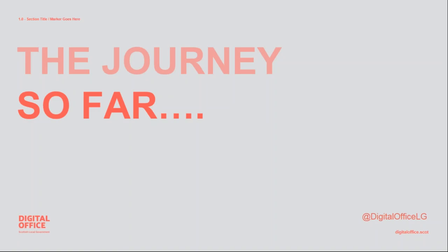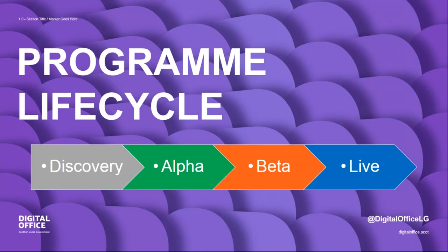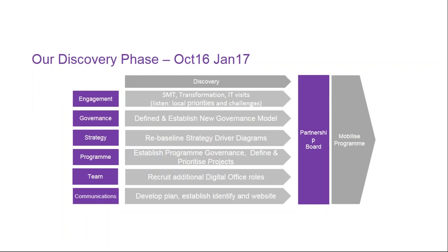So the journey so far. We follow GDS, the Government Digital Service, quite closely and they have an agile methodology with a program lifecycle of discovery, alpha, beta and live. When we first set up in October last year we took that same program lifecycle to get to where we are today. In the discovery phase from October to January, it was only myself and Colin — myself as Chief Digital Officer and Colin as Chief Technical Officer — and we went out and engaged with senior management teams across 30 councils around Scotland. We defined the governance, baselined the strategy, established programs, and defined prioritised projects — a whole lot of stuff in three months.